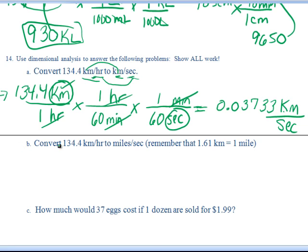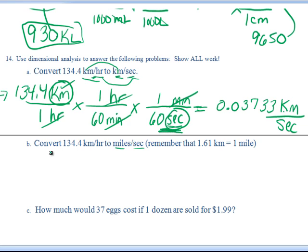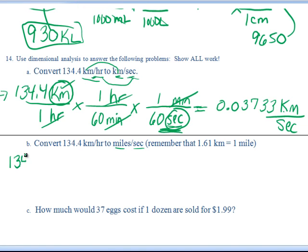Part B. It says convert 134.4 kilometers per hour — same thing — to miles per second. So now not only are we going to convert it to seconds, but we're also going to convert the kilometers to miles. Write down what you've got and write small because it's going to be a long problem.